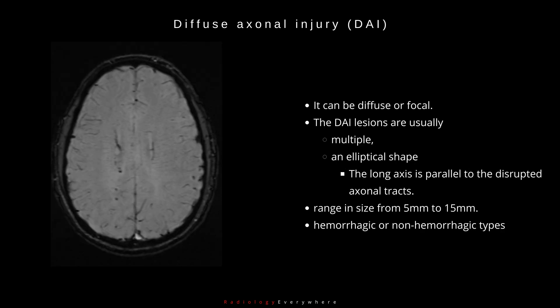DAI can be diffuse or focal, and the lesions are usually multiple. They have an elliptical shape, with the long axis parallel to the disrupted axonal tracts. They range in size from 5 mm to 15 mm and can be either hemorrhagic or non-hemorrhagic.